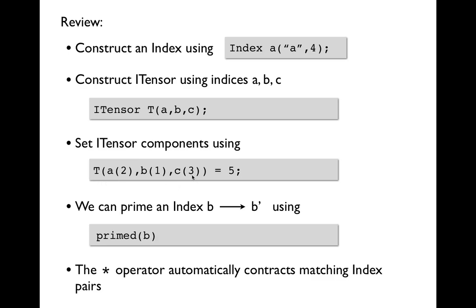And, as we already saw, we can prime an index. We can use this to set up contractions ahead of time and then use the star operator to automatically contract matching index pairs.